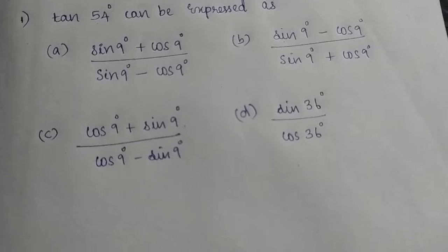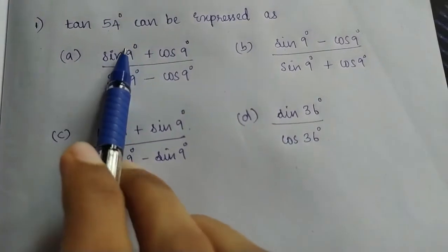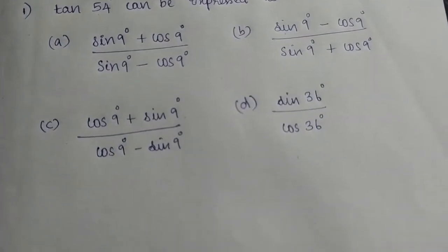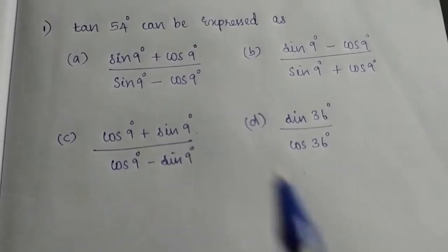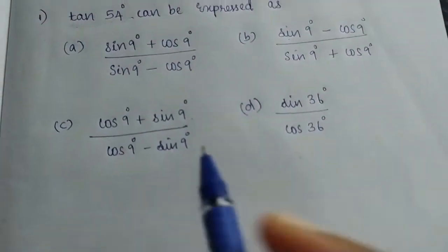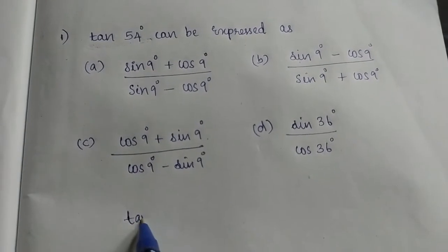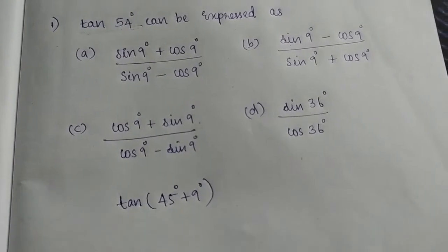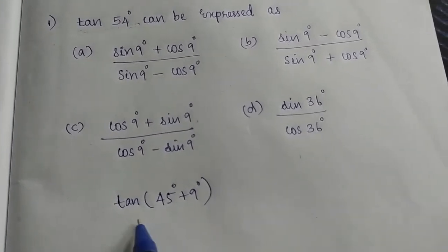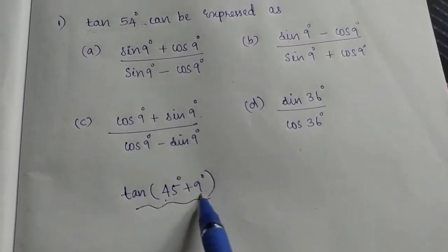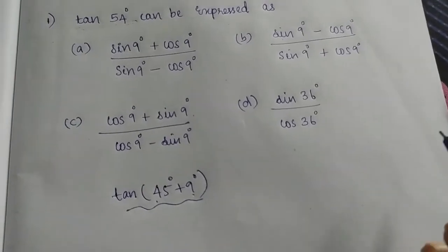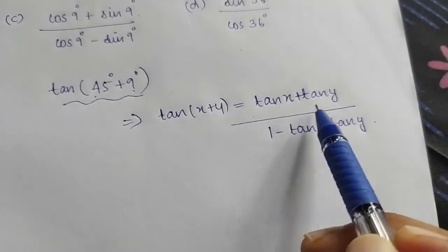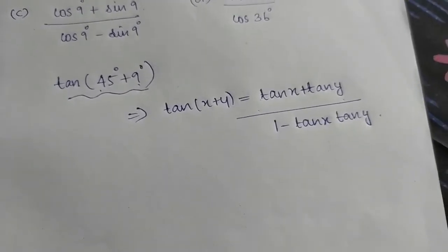Let's do one thing. The first question is: 1054 degree can be expressed as? It is not a simple sin and cos formula. We need to split tan54 degree. We have a standard angles formula — is it tan45 degree plus 9 degree? We have a formula: tan of x plus y. The formula is written as tan x plus tan y divided by 1 minus tan x times tan y.